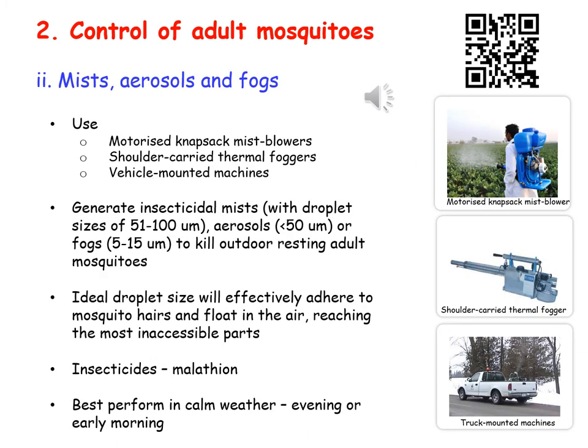Mist, aerosols, and fogs are usually performed in calm, non-raining weather, either in the morning or evening during the mosquito active period. The insecticide of choice includes malathion, and the aerosols are usually produced by motorized machines. The aerosols are produced in a suitable size so they easily attach to the mosquitoes and can float in the air for longer periods, reaching wider areas.